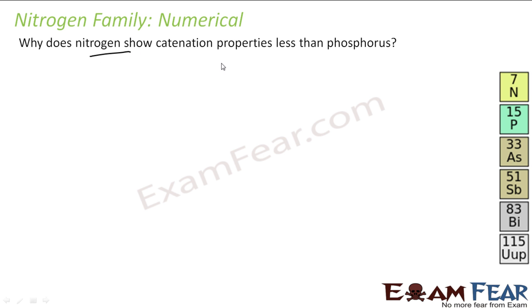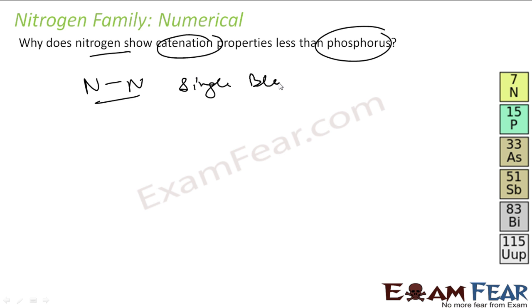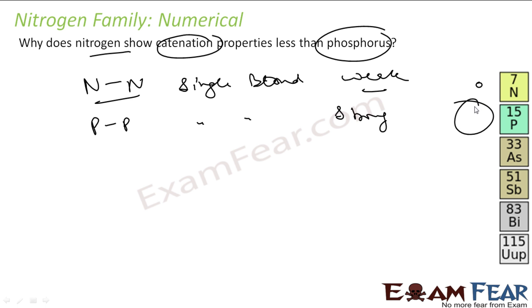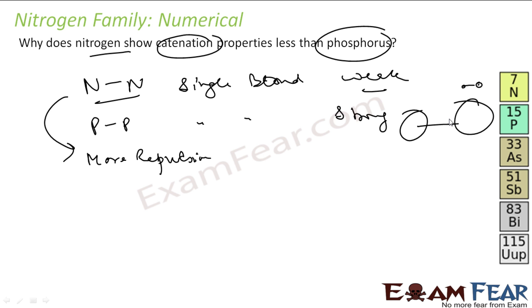Why does nitrogen show less catenation tendency than phosphorus? Nitrogen has a weak N-N single bond, while phosphorus has a strong P-P single bond. This is because nitrogen is small in size, causing more repulsion between electron clouds, weakening the N-N bond. Phosphorus is bigger in size, so repulsion is less and the P-P bond is stronger. Therefore, phosphorus has a greater tendency to form catenation — forming chains like carbon does.